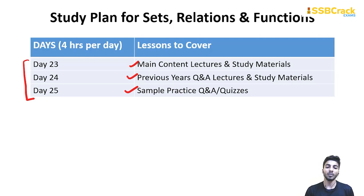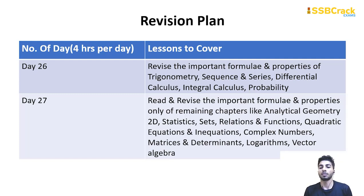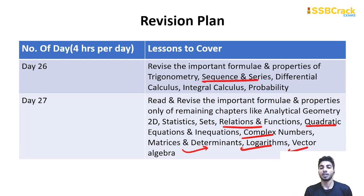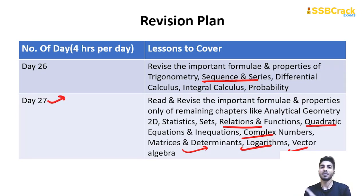Day 26 and day 27 are for revision of all concepts studied. If you have extra time, you can also skim through remaining chapters like complex numbers, logarithms, vector algebra, quadratic equations, sequence and series — but only revise formulas and basic properties. Don't go too deep because you don't need to clear a PhD. With the exam just three days away, just revise basic formulas and concepts — nothing more.